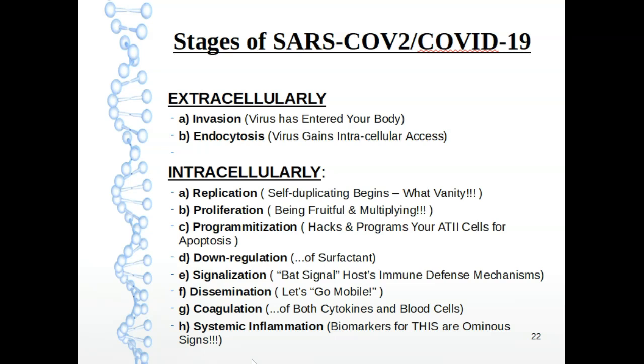Next we see the SARS-CoV-2 virus will hack and program our alveolar type 2 cells for apoptosis or cell destruction where our cells will literally explode once the coronavirus is used up all of the resources inside of it. We also see that it hacks and down regulates the surfactant production of type 2 pneumocytes. All right and then we see that they will give out this false signal alert like a batman call so that all of our immune defense mechanisms all of those different proteins and antibodies will come charging over to the site of the action. Then we see dissemination meaning it's ready to go mobile.